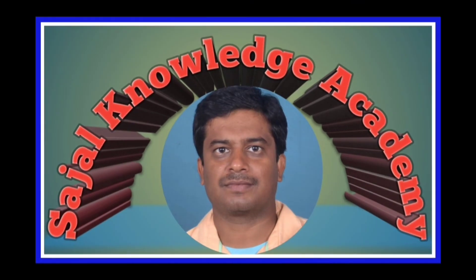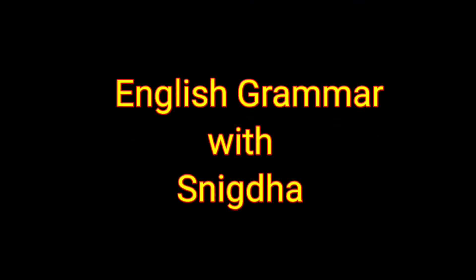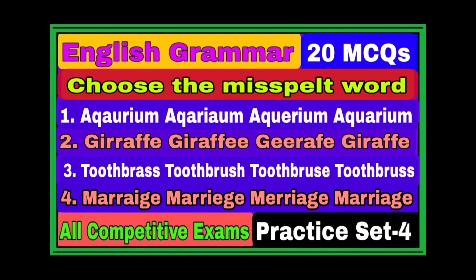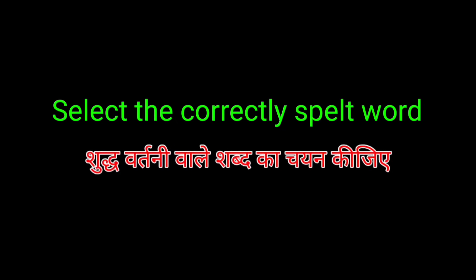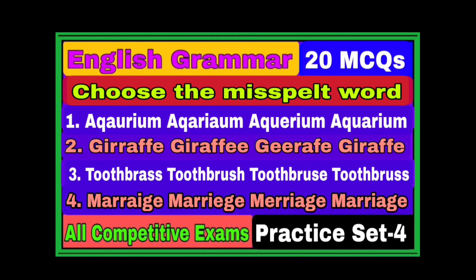Hi friend, welcome back to Sajul Malaj Academy. My name is Niktha and today's video is about English Grammar Practice Set 4. The topic is: select the correctly spelled word. It is very helpful to learn English Grammar and very important for all types of competitive examinations. Total questions in each set is 20 and the time for each question is 5 seconds. So let's get started.